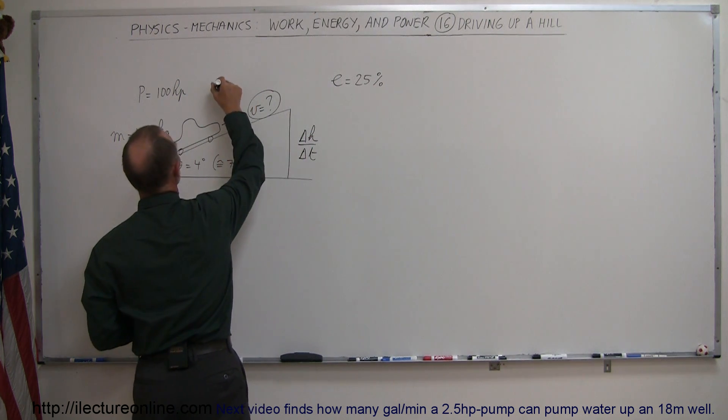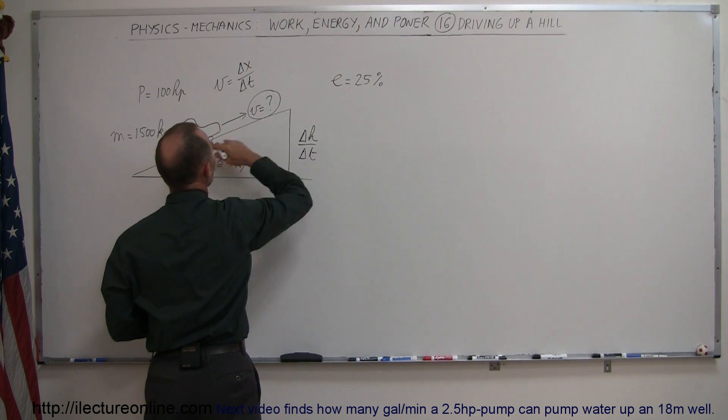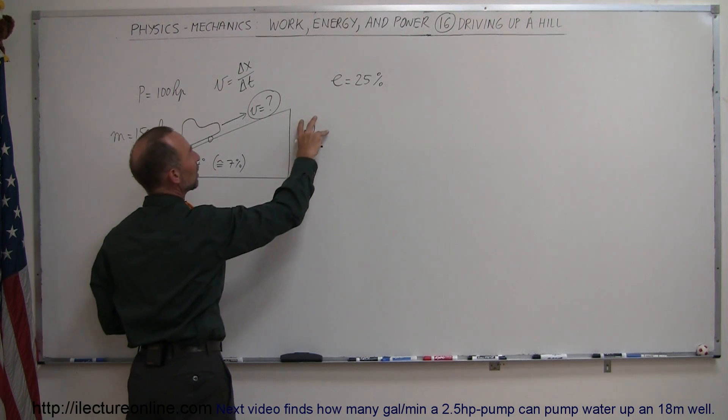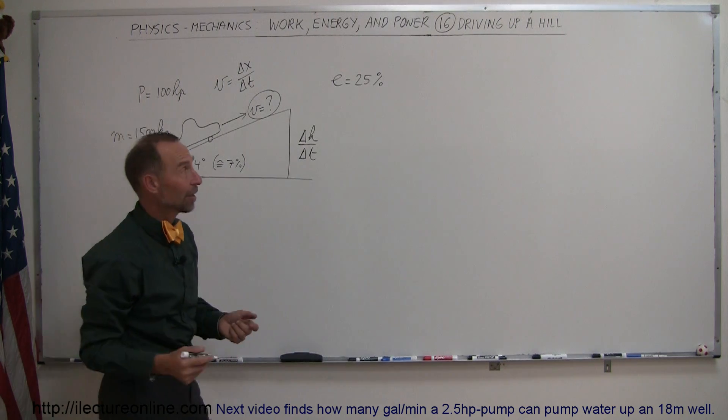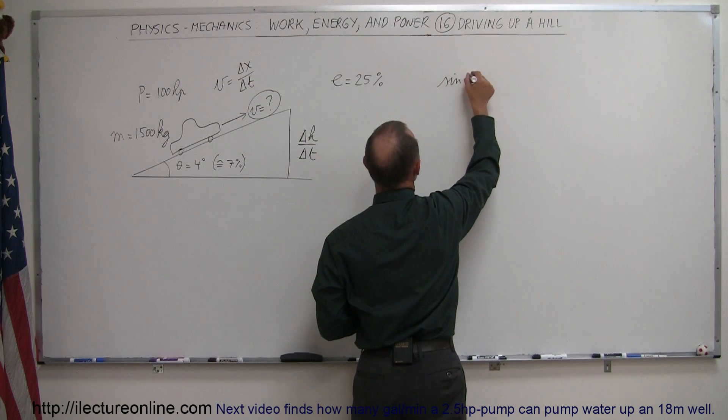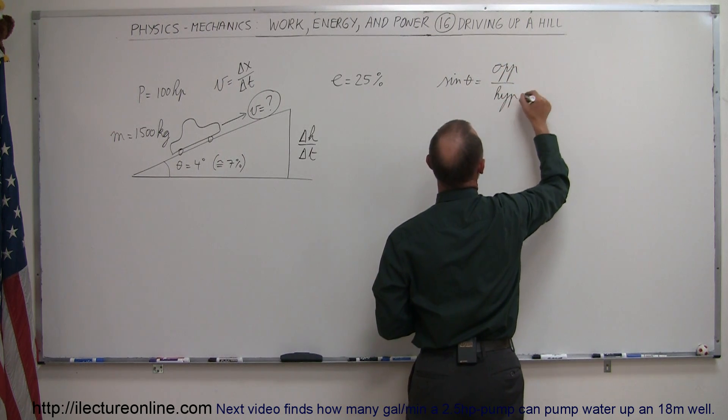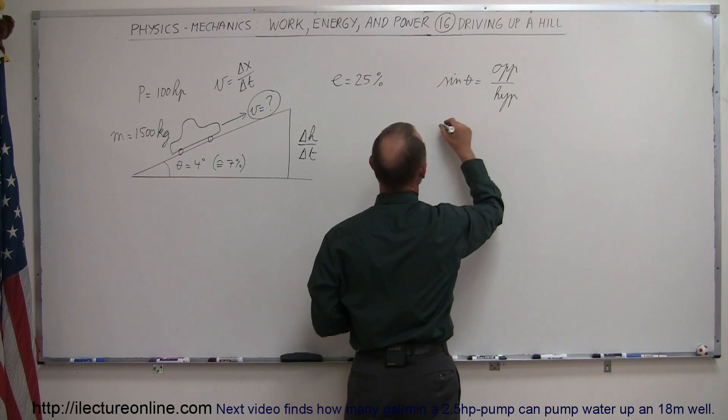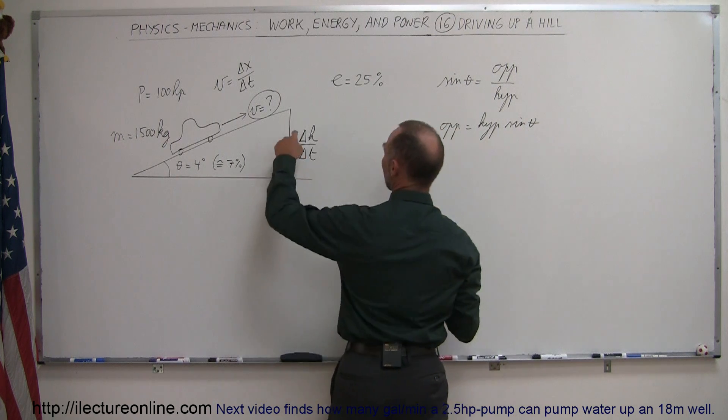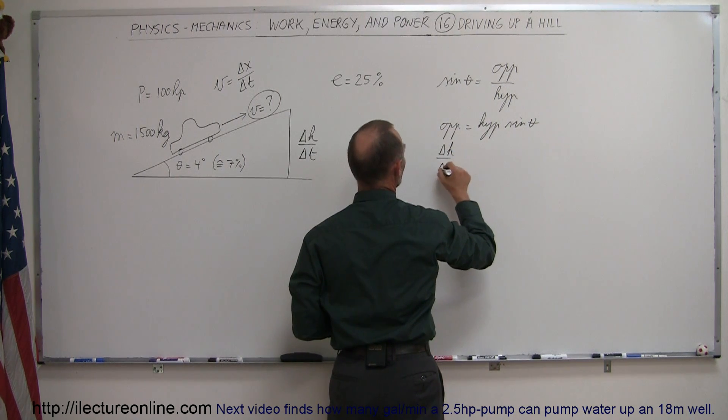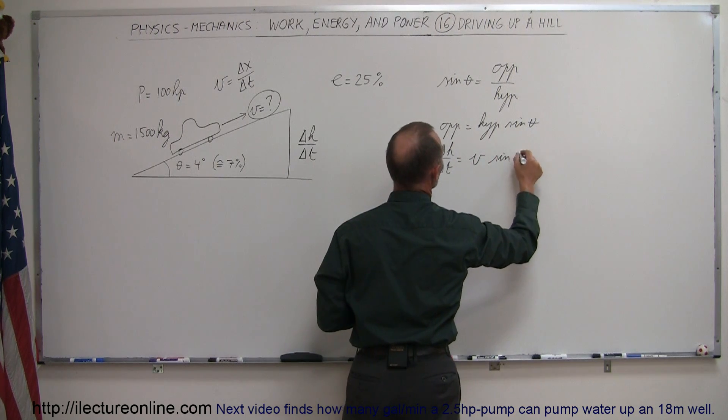And realizing that velocity is equal to delta X delta T along the hypotenuse, we can then say that the relation between delta H delta T and delta X delta T, which is velocity, and the angle can be found using the sine, so that the sine of the angle theta is the ratio of the opposite side over the hypotenuse. That means the opposite side is equal to the hypotenuse times the sine of theta, and the opposite side is delta H delta T, which is equal to the hypotenuse, which is the velocity, delta X delta T times the sine of theta.